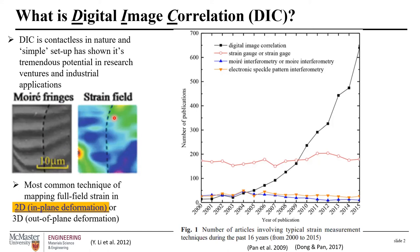As shown on the graph, after 2005 the number of publications using the DIC technique rose exponentially, whereas other techniques to measure or map strain either maintained their popularity throughout the years or slightly decreased in popularity.